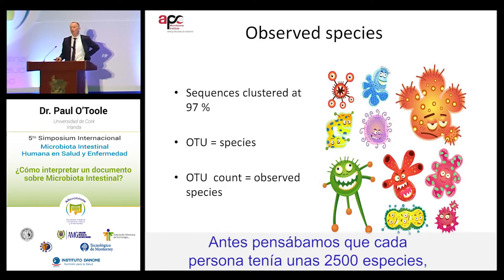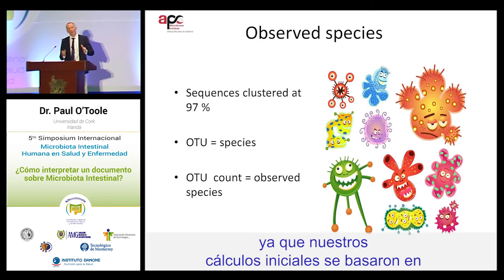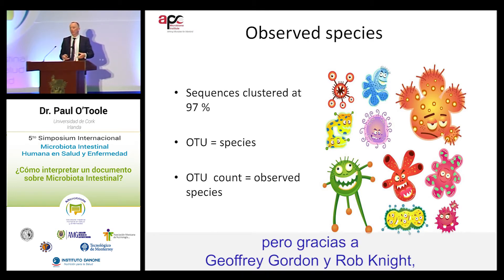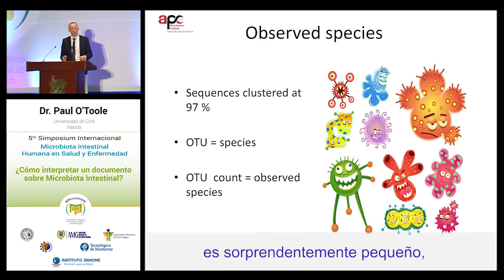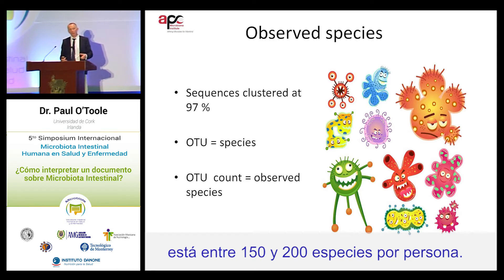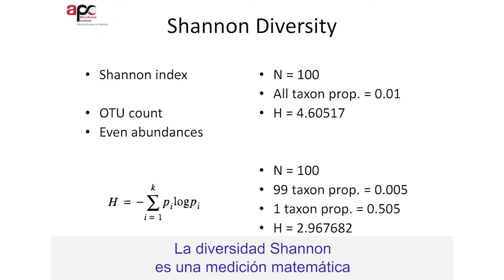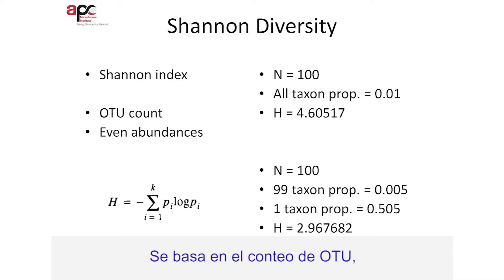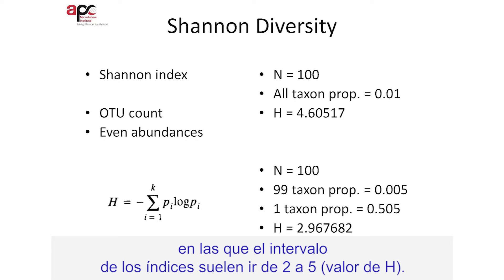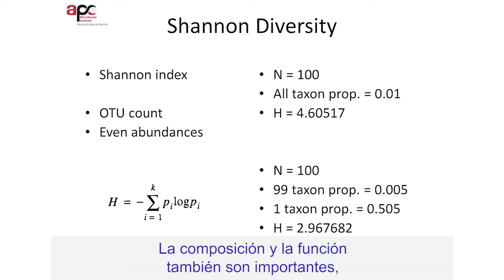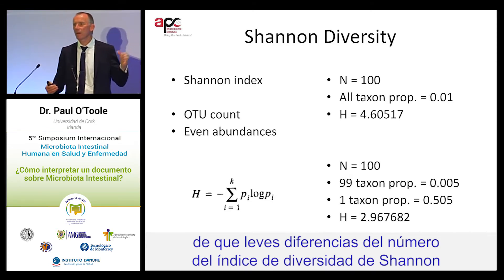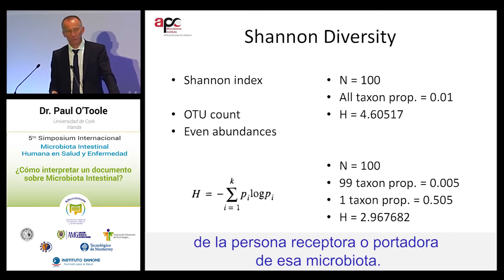We used to think that each person had around 2,500 species, because our initial estimates were based on inaccurate PCR methodologies. Thanks to Geoffrey Gordon and Rob Knight, we now know that the number of species in one person is actually surprisingly small — typically between 150 and 200 species per person. Shannon diversity is a mathematical measure which uses a slightly different methodology based on the OTU count, with a range of indices typically from 2 to 5. Small differences in the Shannon diversity index can make a big difference for the biology of the person carrying or receiving that microbiota.